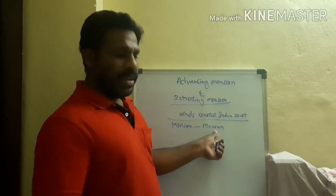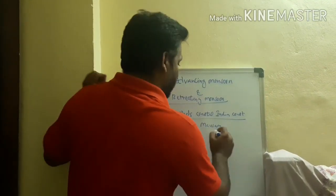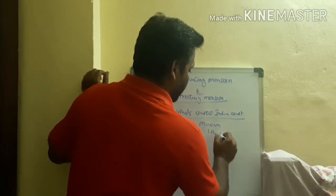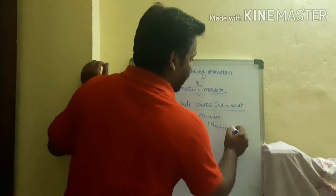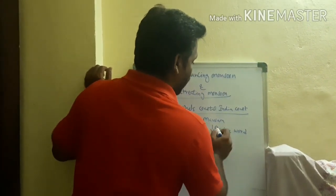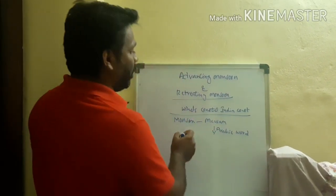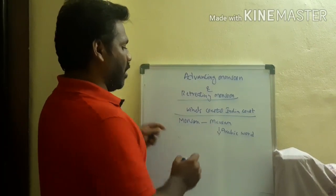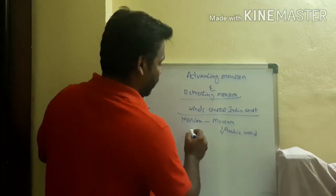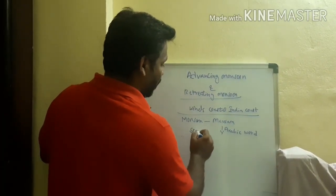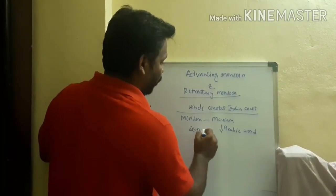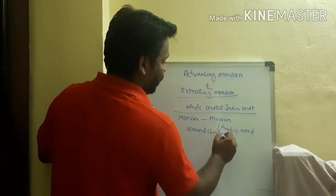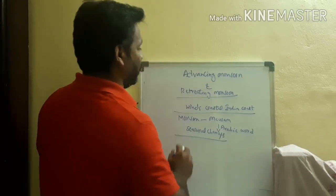The word 'monsoon' is an Arabic word. It is derived from the Arabic word 'Mausam', meaning seasonal changes. So the climate of India is influenced by these monsoon winds, and the term itself reflects the seasonal nature of these winds.